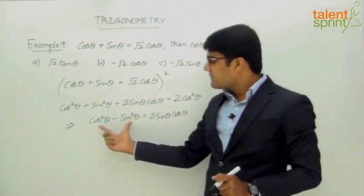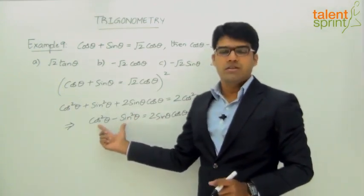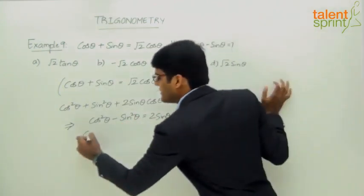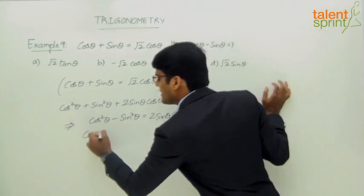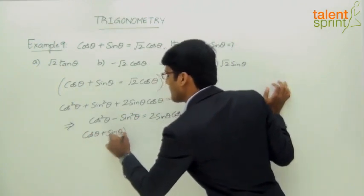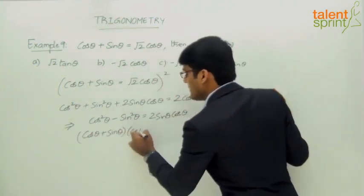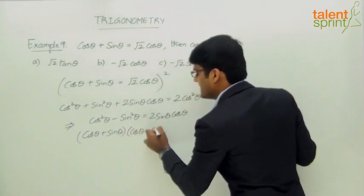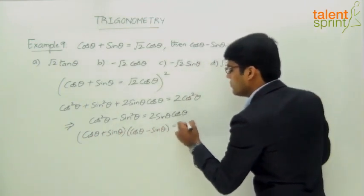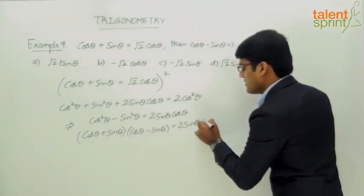This is in the form of A squared minus B squared, which factors as (A + B)(A − B). So cos theta plus sin theta into cos theta minus sin theta equals 2 sin theta cos theta.